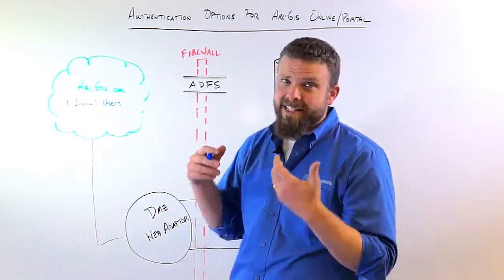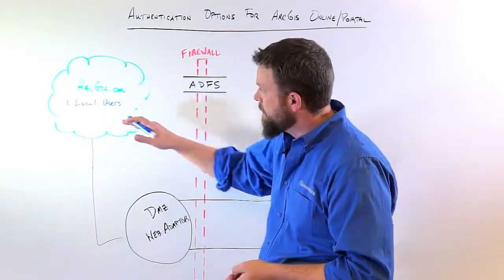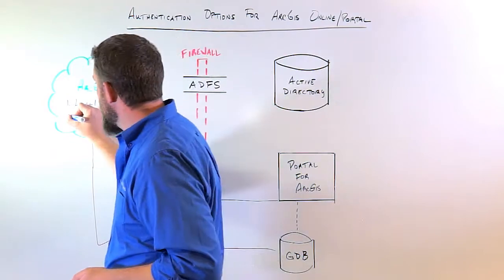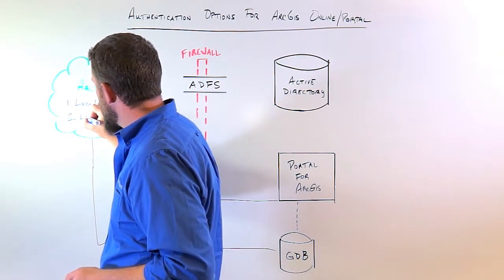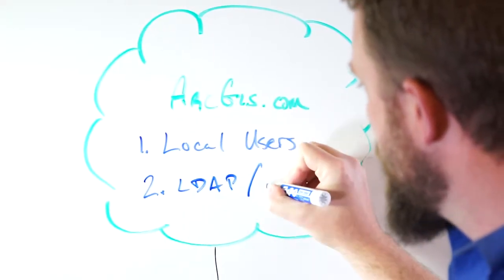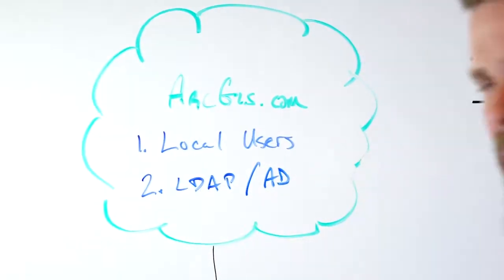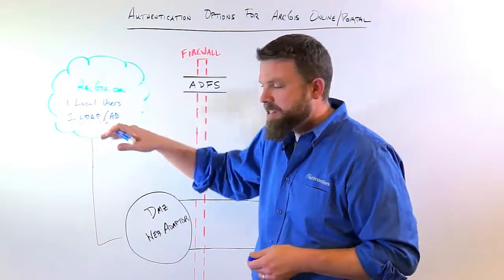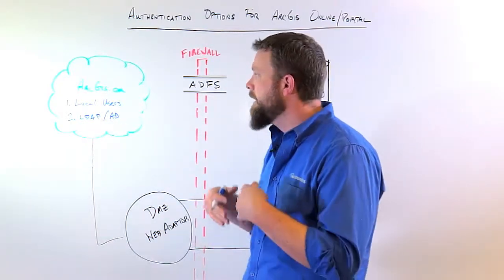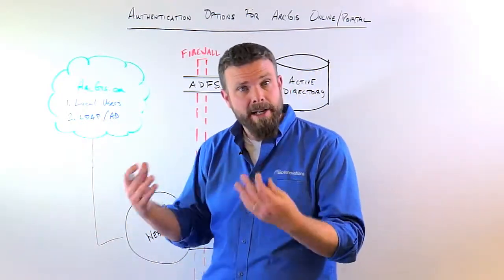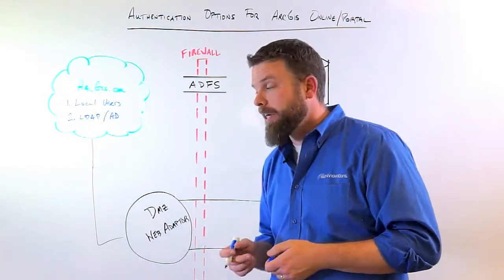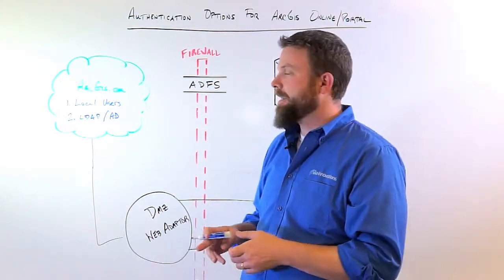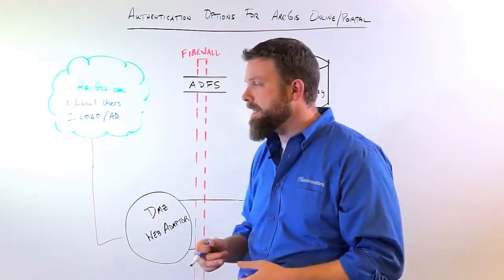If local users absolutely won't work for you and you still want to use ArcGIS.com, the second way is to put in something to do with your LDAP or Active Directory authentication. Almost everybody has Active Directory these days, so we'll hone in on Active Directory specifically, though Esri supports other LDAPs as well — there's a lot more information online. To do this is doable, but it's a little bit tricky, so I want to talk through some ins and outs.